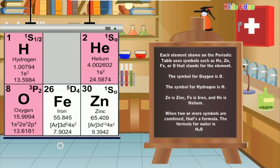Each element shown on the periodic table uses symbols such as HE, NE, F, or O that stands for the element. For example, the symbol for oxygen is O. The symbol O stands for one atom of oxygen. The symbol for hydrogen is H. Zn is zinc. Fe is iron. And He is helium. When two or more symbols are combined, that's a formula. The formula for water is H2O. H is the symbol used for hydrogen, and O is the symbol used for oxygen.